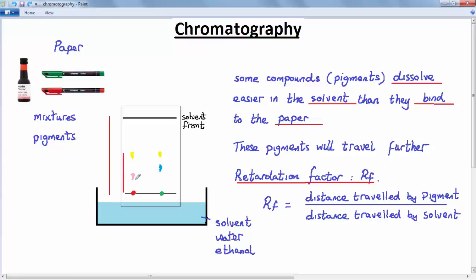For example, if the pigment distance were 3 cm and the solvent distance were, say, 6 cm, then the RF value for the yellow pigment would be 3 cm divided by 6 cm, which would be equal to 0.5. That's a unitless factor.